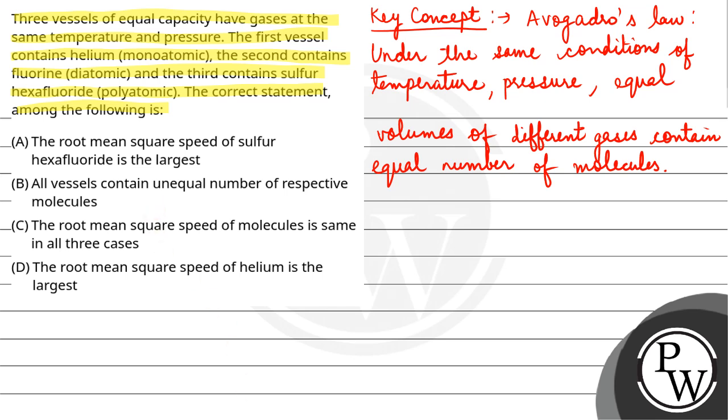Now we will talk about root mean square speed. Root mean square speed of a gas molecule is equal to the square root of 3RT/M.